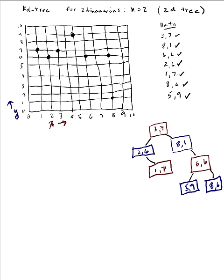Now let's search for (1,7), shown right here on the grid. 1 is less than 3, so I go left; 7 is greater than 6, so I go right — and there's my node.